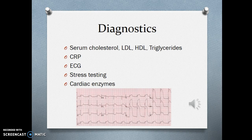Key diagnostics include serum cholesterol, LDL, HDL, and triglycerides. CRP — C-reactive protein — is an inflammatory marker used to look at systemic inflammation and speaks to the risk for coronary artery disease and cardiovascular problems. The ECG shows the electrical activity in the heart; when you have an alteration in perfusion to the heart, the electrical activity changes. An abnormal EKG may indicate myocardial injury. Stress testing and cardiac enzymes are also important, as are coronary angiography and cardiac CT scan.